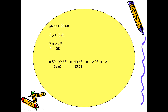To calculate the Z-score: Z = (x − x-bar) / SD = (59 − 99.68) / 13.61 = −2.98, which is almost equal to −3. This means the value of 59, according to the Z-score, is present at minus three standard deviation in the normal distribution.